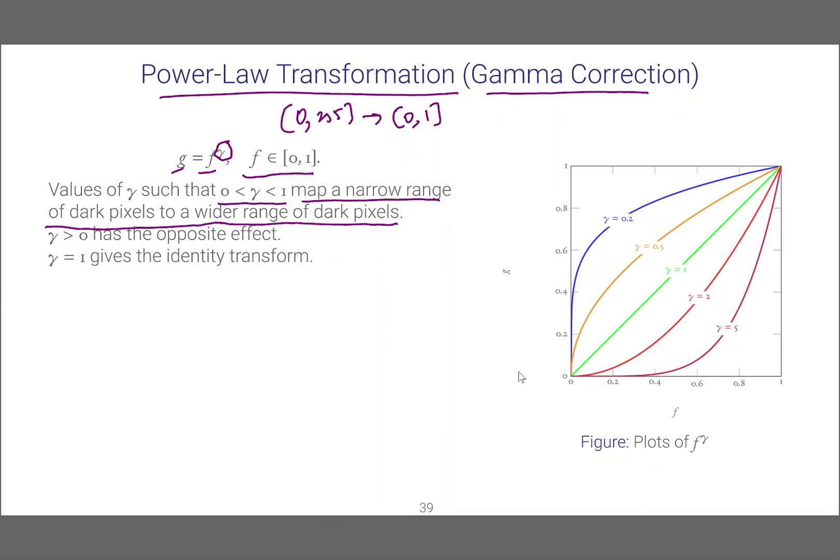Let's take for example gamma equals 0.5. If we take these dark pixels from 0 to 0.2, the intensities are from 0 to 1 in this case we have normalized to 1. 0.2 gets mapped to somewhere here. You see this output range is larger in comparison with the input range. That is why we say this operation maps a narrow range of dark pixels to a wider range of dark pixels.